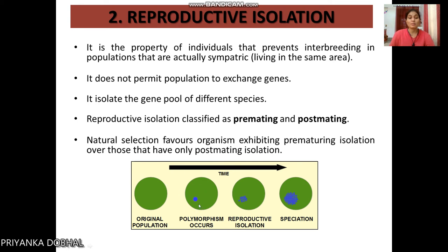There are organisms in the green color representing all the original individuals. Some organisms show polymorphism — different structures or different body parts. Because of this polymorphism, some individuals change their body structures and can only match with each other, represented by the blue color. The rest of the green-colored individuals cannot match with the blue-colored ones, so we see reproductive isolation.